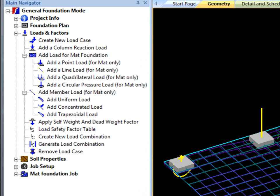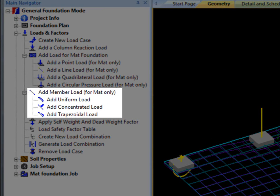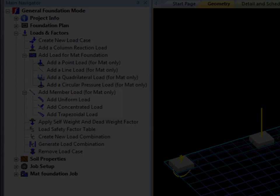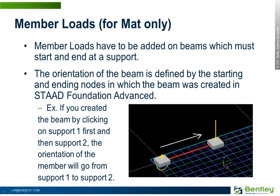I will now begin to discuss the three loading types that may only be added on beams and mat foundation. They are uniform, concentrated, and trapezoidal loads, and are referred to as member loads. Member loads have to be added on beams which must start and end at a support. The orientation of the beam is defined by the starting and ending nodes in which the beam was created in STAD Foundation Advanced. For example, if you created the beam by clicking on support 1 first and then support 2, the orientation of the member will go from support 1 to support 2. This orientation is used as reference to define all positions of the following member loads.